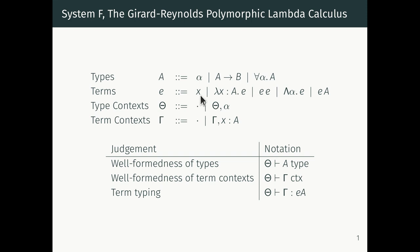Our terms are going to be variables, ordinary lambda abstractions, and ordinary applications. To that we add two additional type constructors. One, which we call big lambda, is the introduction form for the polymorphic type quantifier. If you can introduce for-all alpha A, we bind the type variable alpha and in the body use the expression e. And if you have something of a polymorphic type you can instantiate that polymorphic type quantifier with the type A.